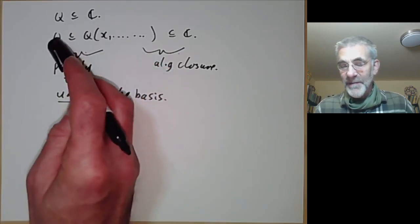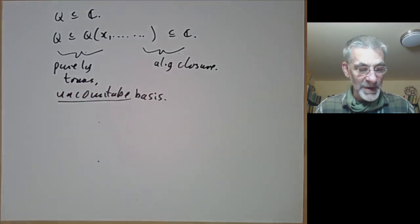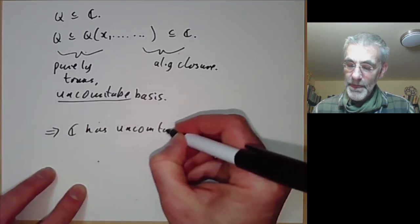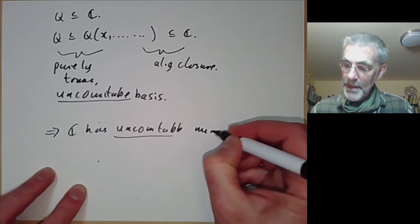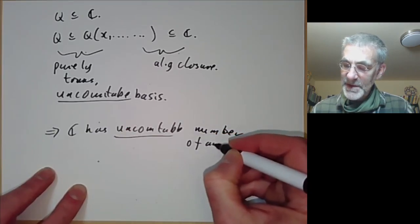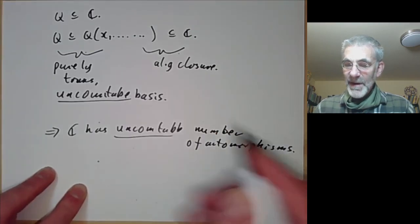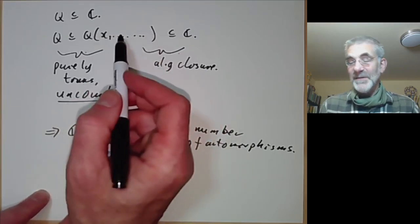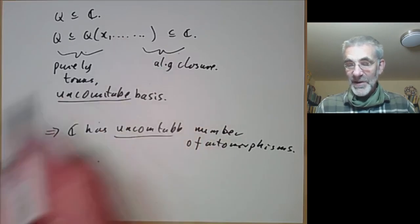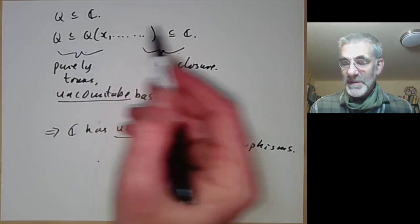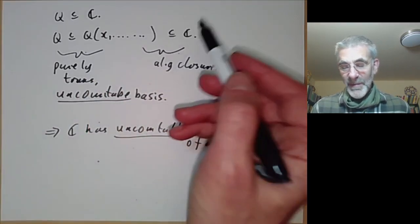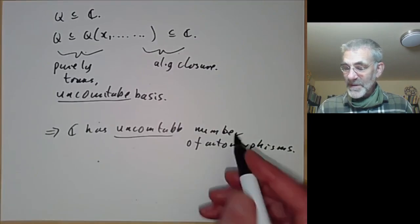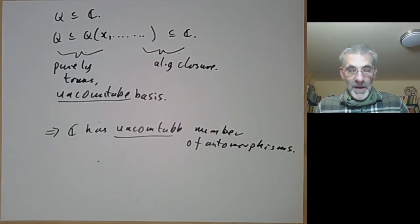This implies that the complex numbers have an uncountable number of automorphisms. This intermediate field has huge numbers of automorphisms — for instance, we can just permute all the basis elements, which already gives us a huge uncountable group. And then we can extend any automorphism of that field to its algebraic closure. There isn't a unique way of doing that, but there's at least one way. So the automorphisms of the complex numbers are absolutely huge.